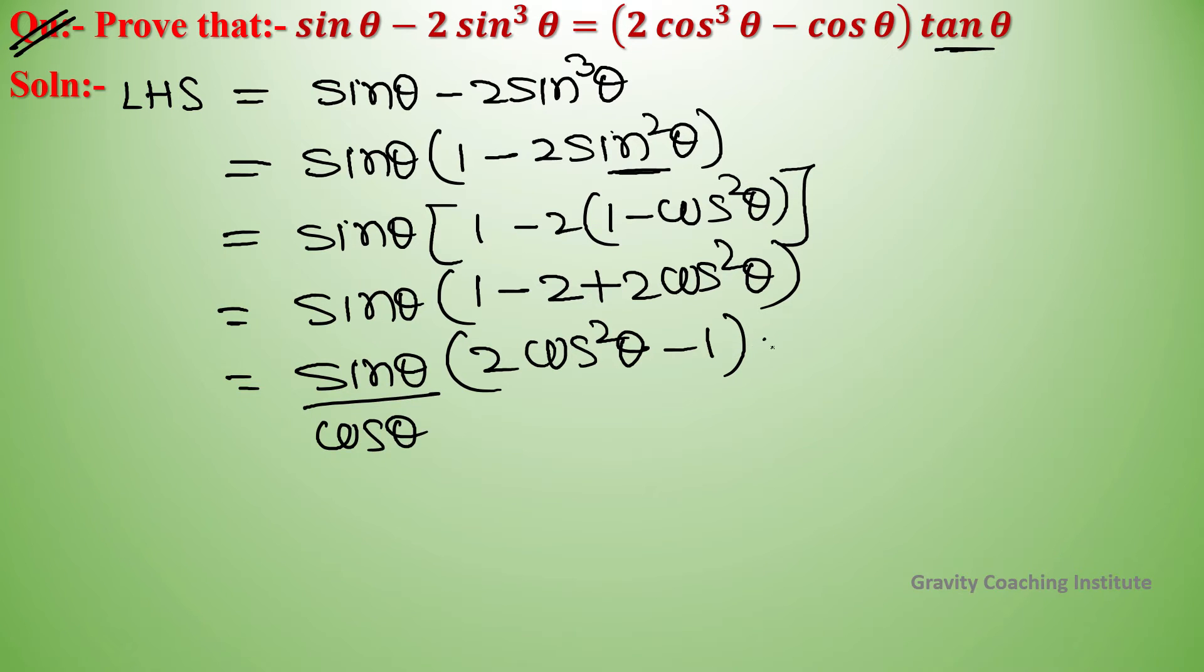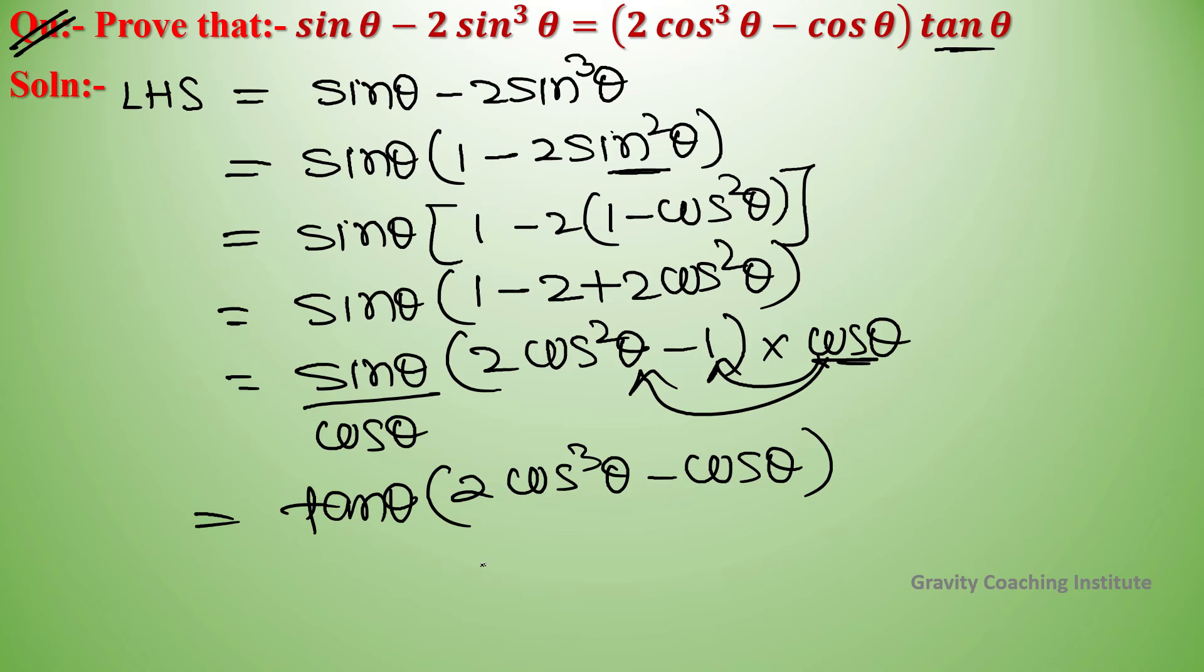Since sin by cos equals tan theta, and we have cos theta terms, we multiply them together. This gives us 2 cos cube theta minus cos theta times tan theta.